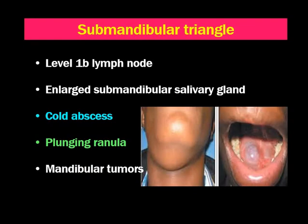Let's discuss about submandibular swellings. The most common swellings in the submandibular triangle are level 1b lymph nodes, which are basically due to infection of the oral cavity or sometimes oropharynx also. When the submandibular gland gets infected or enlarged, it will be seen as a swelling in the submandibular region. By far, the inflammation of the submandibular gland is the second submandibular swelling after lymph nodes.